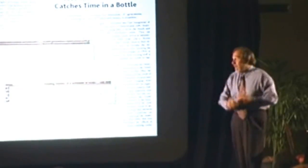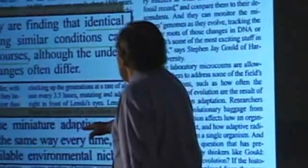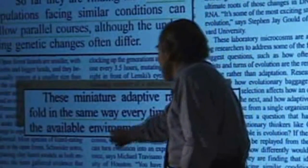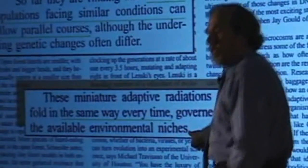Then all of a sudden it says, where's the random nature of that process? And the answer is not random. Evolutionary changes are always adapting to the environment. These miniature adaptive radiations unfold in the same way every time, governed by the available environmental niches.